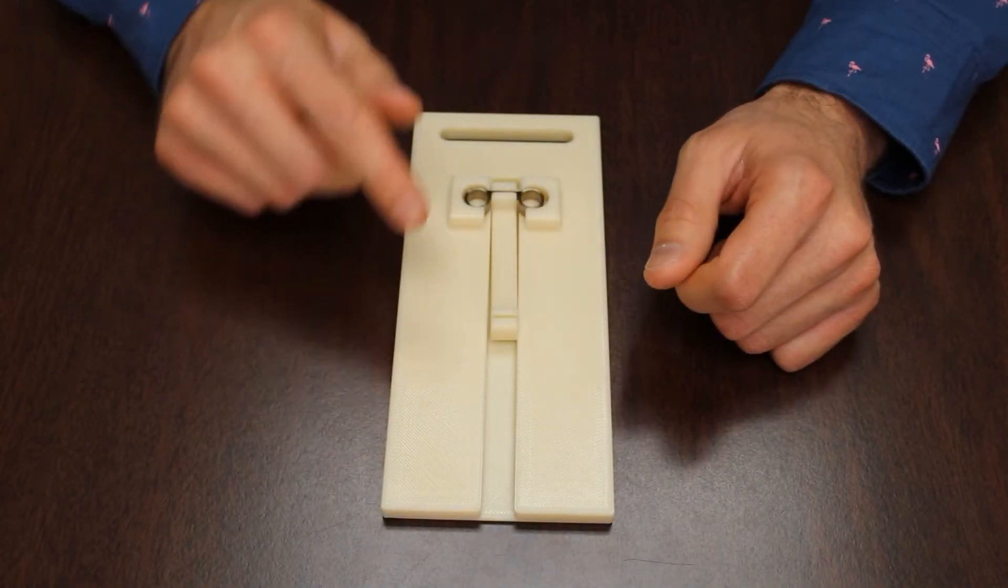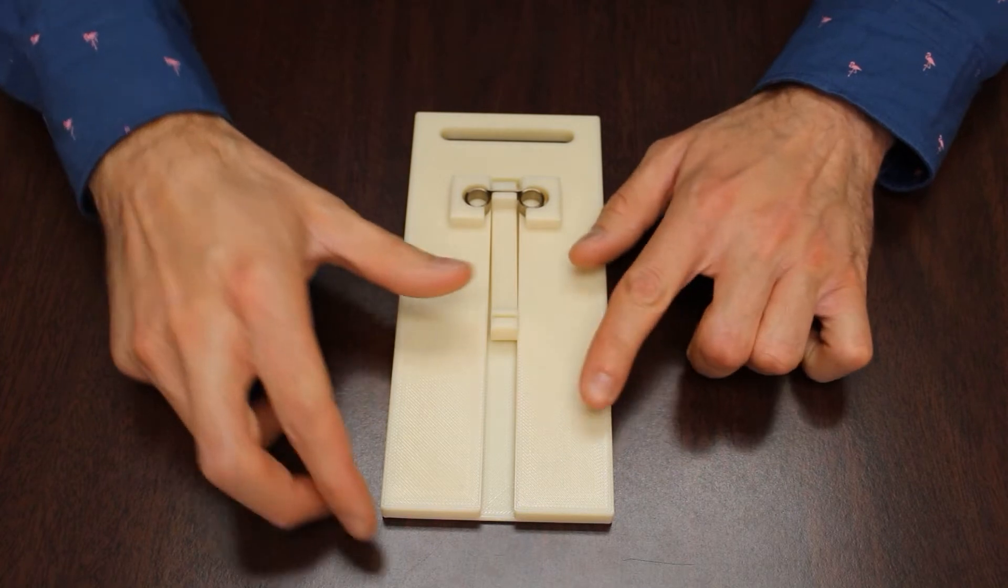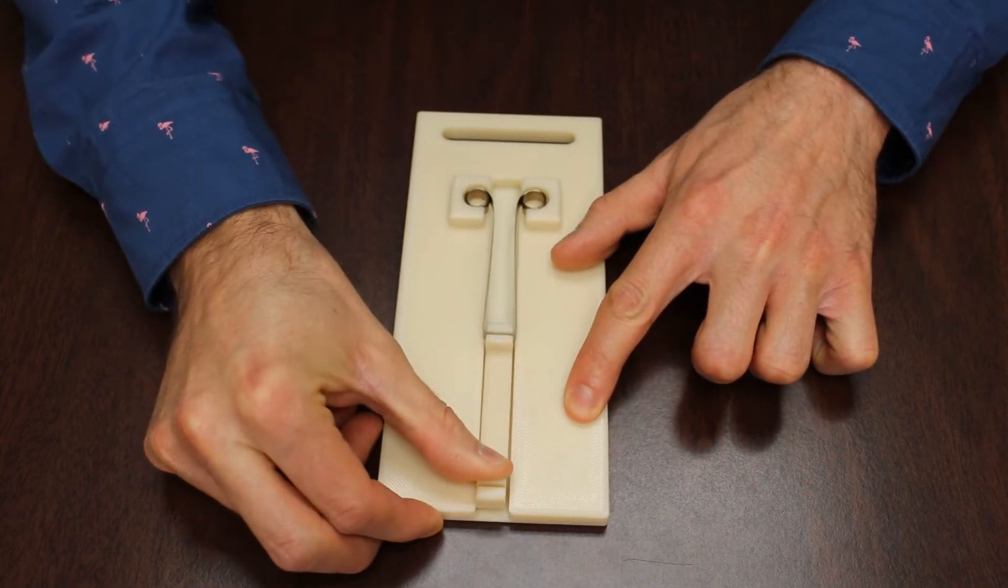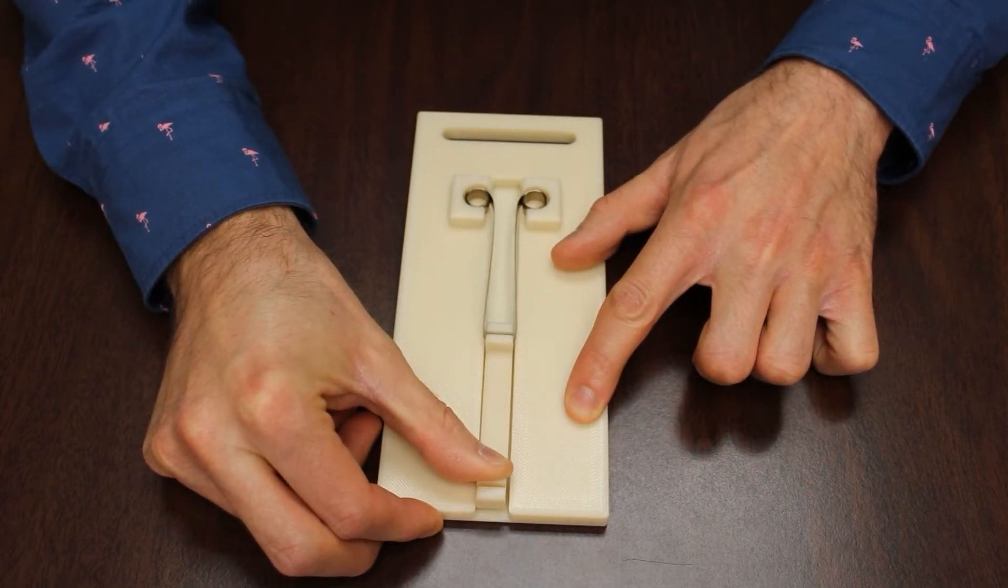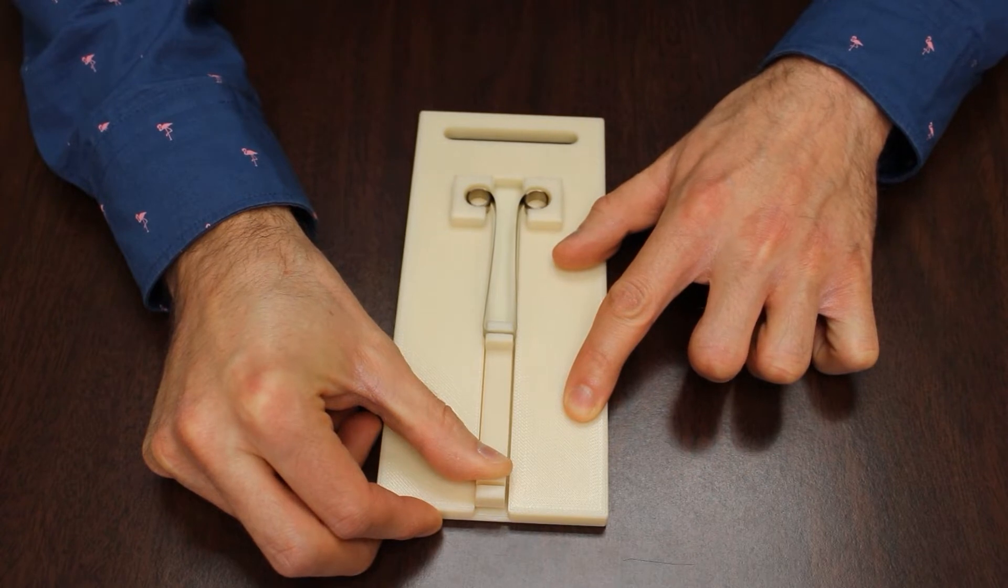When the center portion of the spring, called the saddle, is extended like this, the spring coils exert a force to retract the spring, like this.